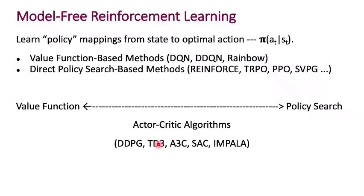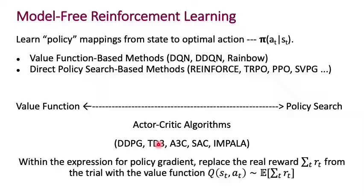The idea here is essentially to say that within the expression for the policy gradient, you're going to replace that real reward — the sum of real rewards, sigma_t r_t — that looked a lot like the value function, with the value function.